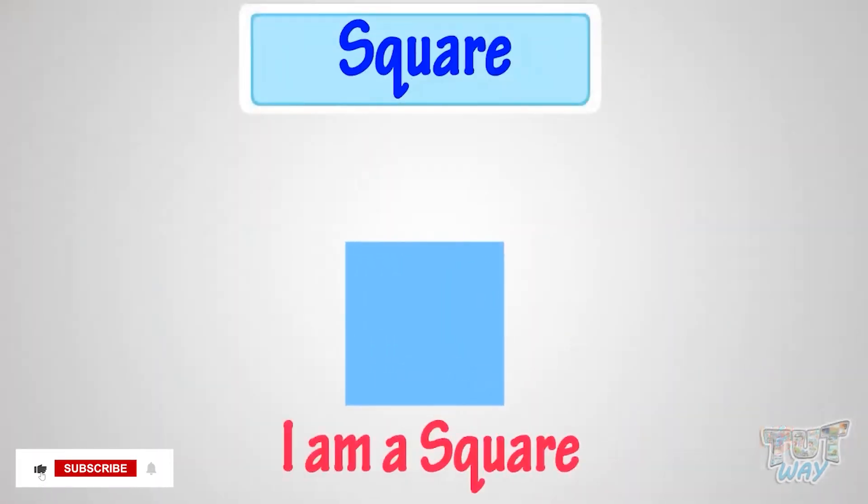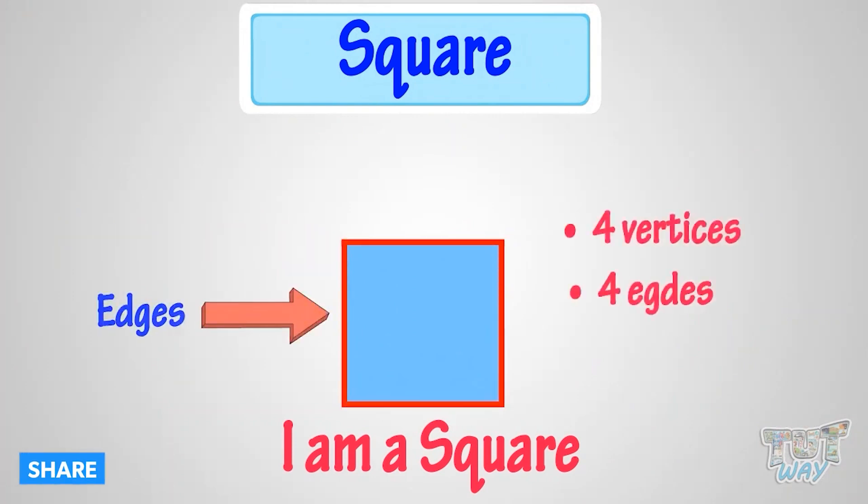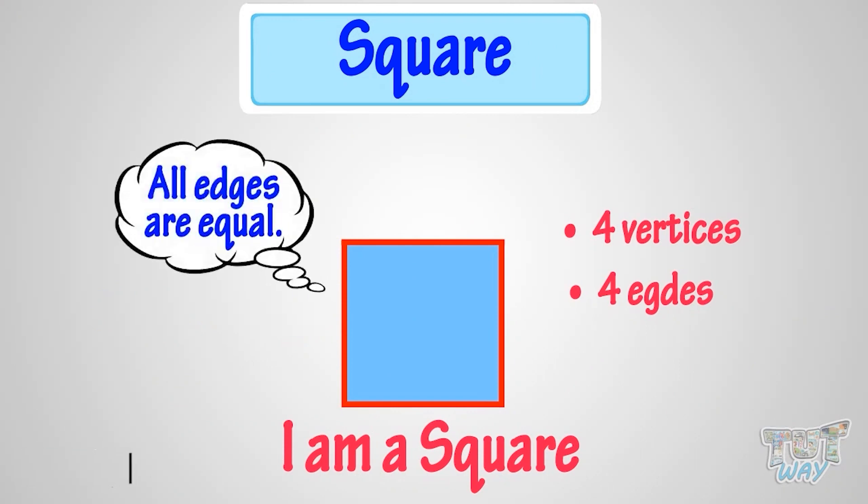I am a square. I have four vertices and four edges where all the edges are equal. Can you see that?